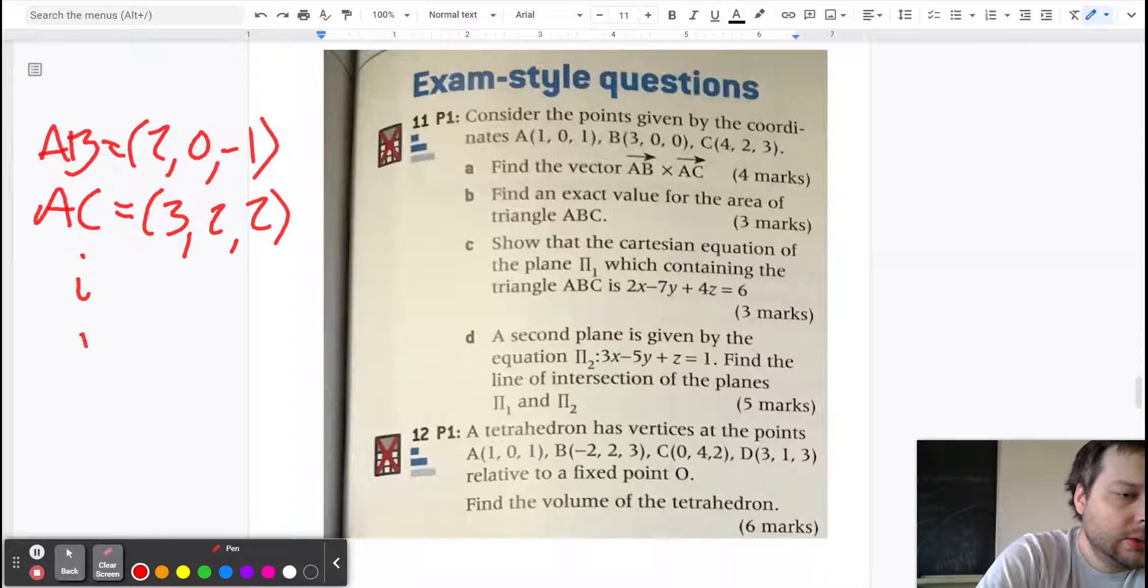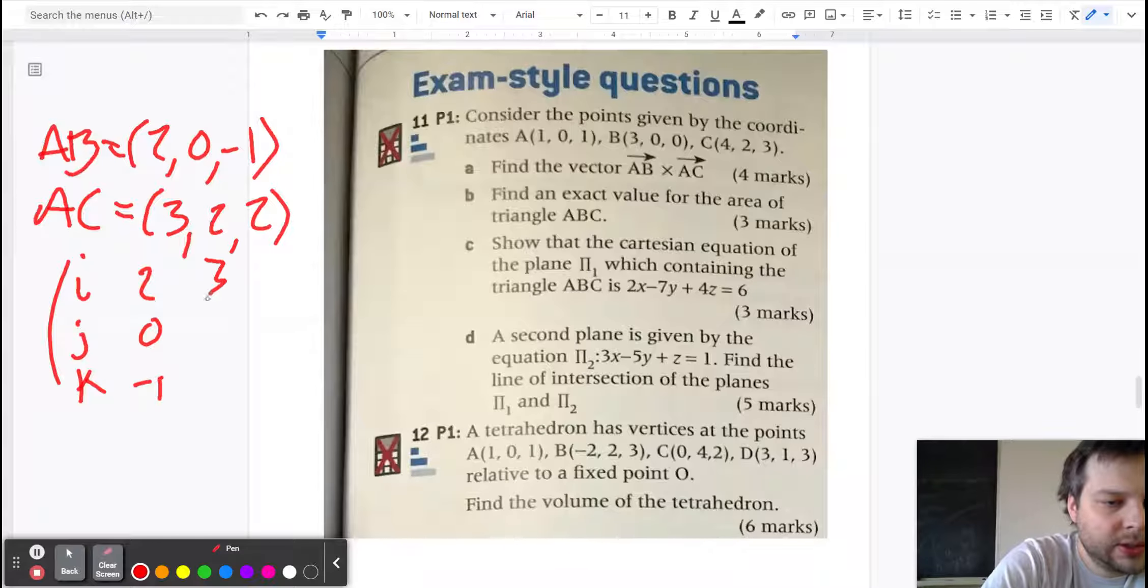So then when we cross product those, we set up our good friend ijk with the first vector with the second vector.